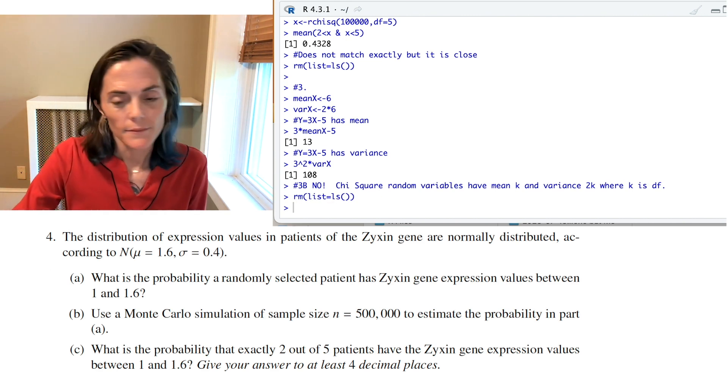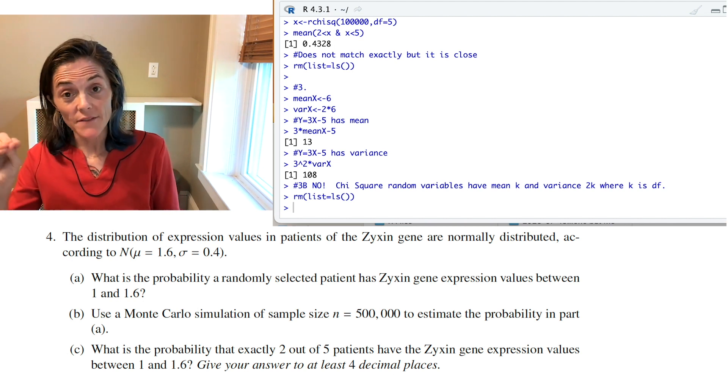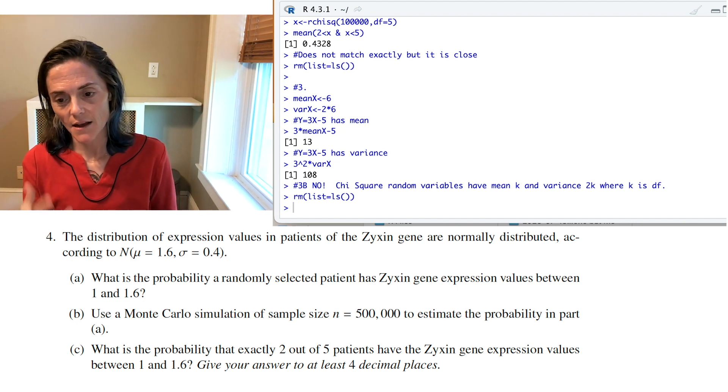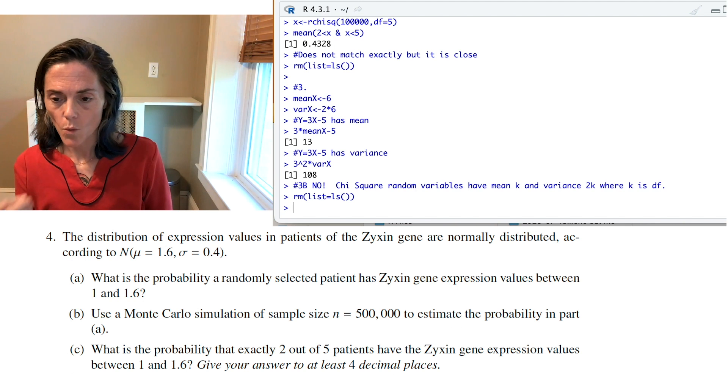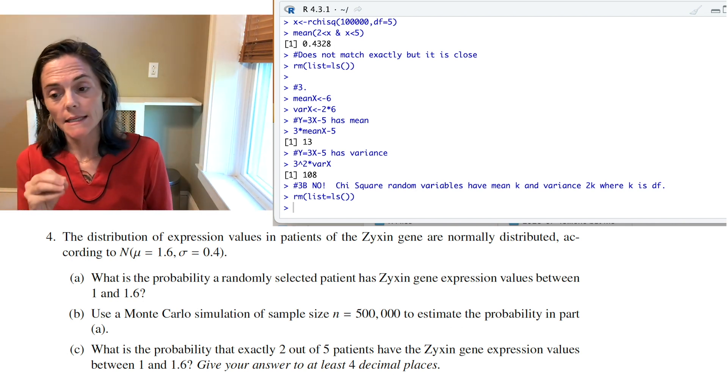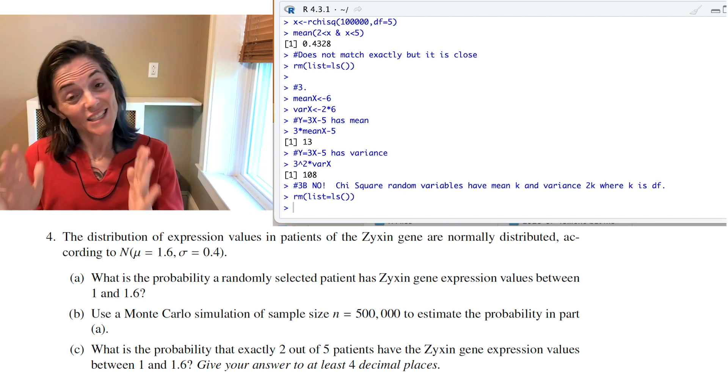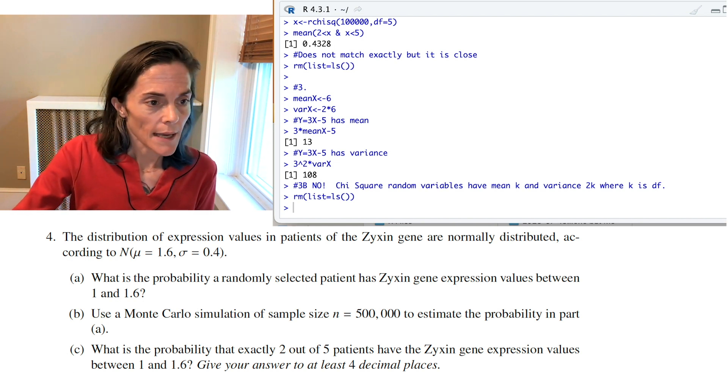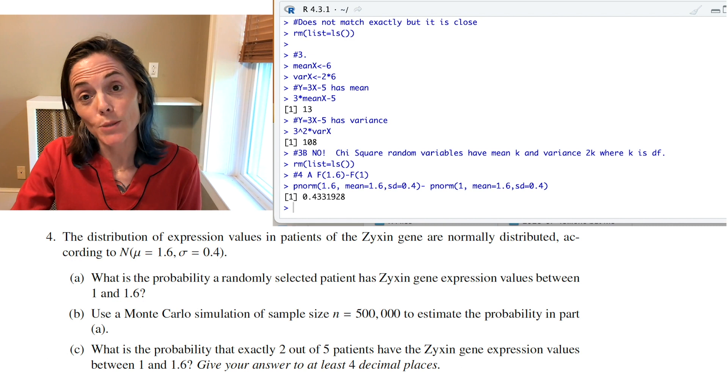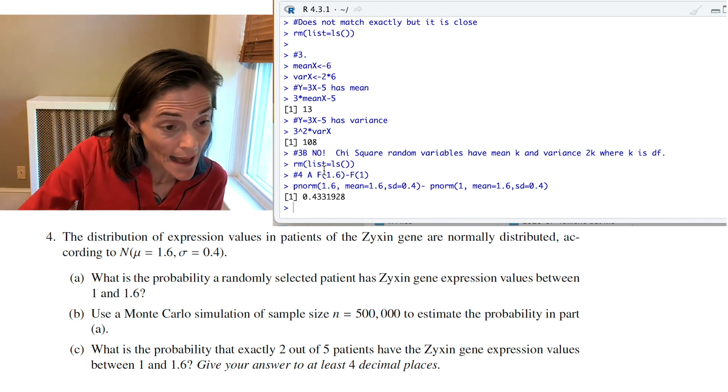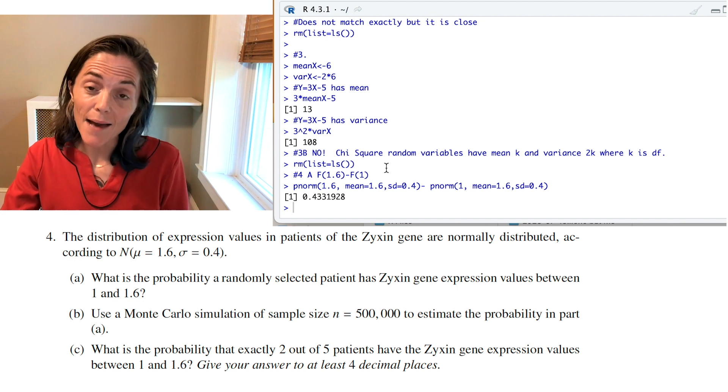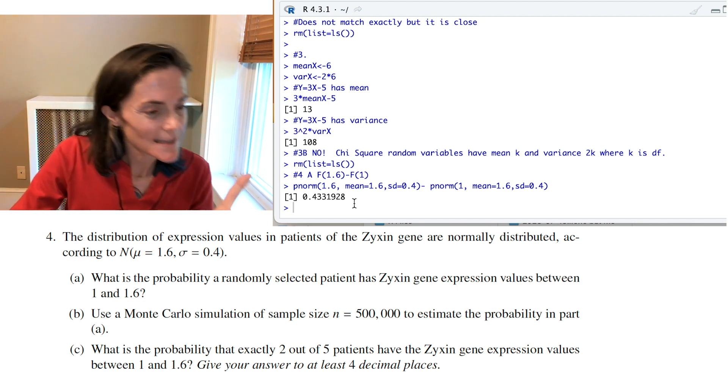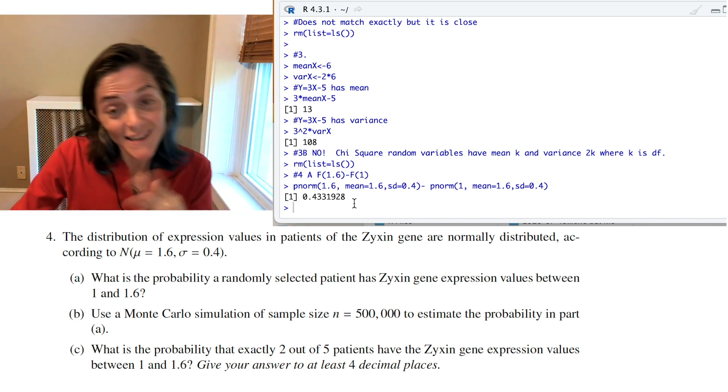Number four, we are told the expression values of a certain gene are normally distributed with a mean of 1.6 and a standard deviation of 0.4. The question is, what's the probability a randomly selected patient has a gene expression value between 1 and 1.6? All right. We can use the cumulative distribution function here. We can take capital F of 1.6 minus capital F of 1. Okay. Here we have it. It is 0.4331928.